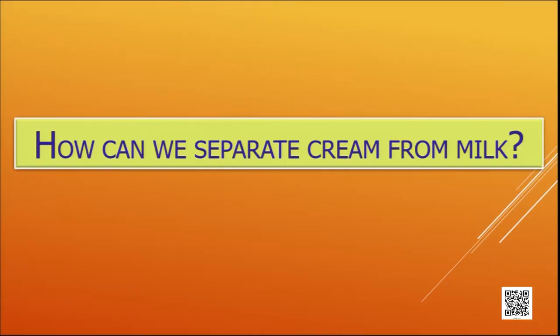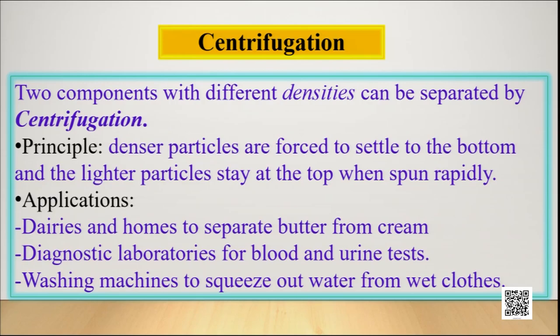Next, how can we separate cream from milk in everyday life? Milk is a heterogeneous mixture — a colloidal solution — that has several components, one of which is cream. The technique used here is centrifugation. The scientific principle behind centrifugation is that the denser particles will settle down and the lighter particles will float when the mixture is rotated at a very high speed.